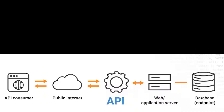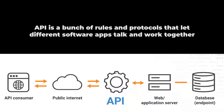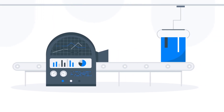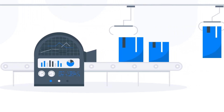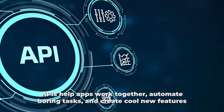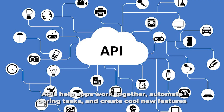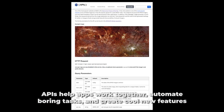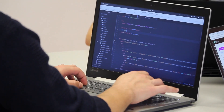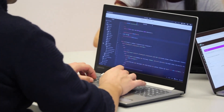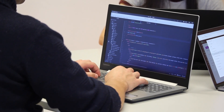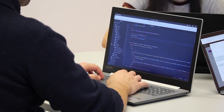In geek speak, an API is a bunch of rules and protocols that let different software apps talk and work together. It tells the apps how to ask for stuff and how to share info, making sure everything runs smoothly. APIs help apps work together, automate boring tasks, and create cool new features. They're like the middleman that lets developers use special tricks without needing to know all the nerdy details, making the whole process way easier.